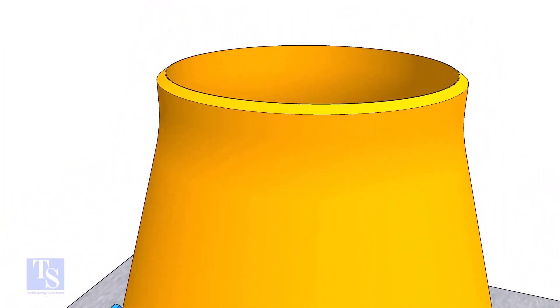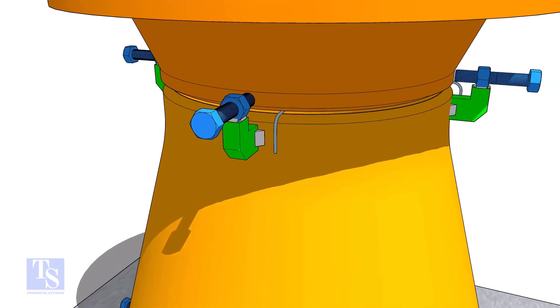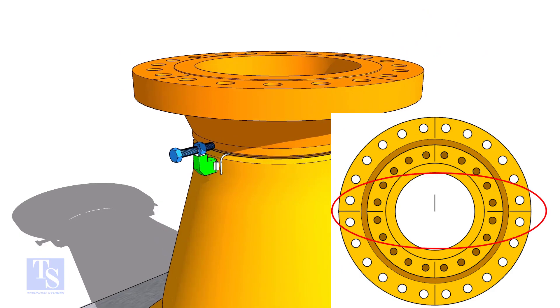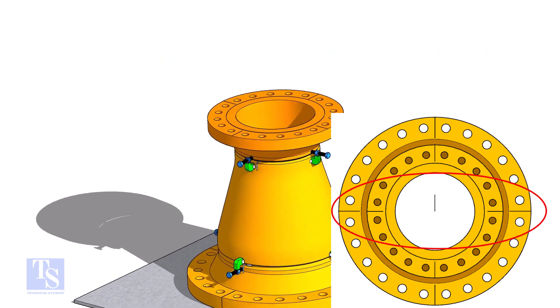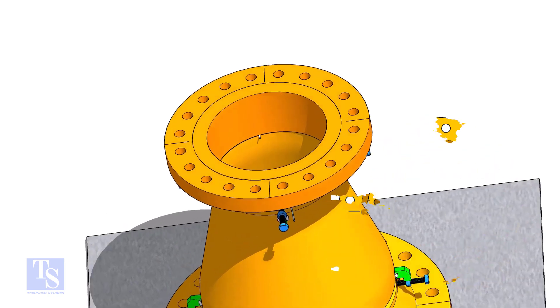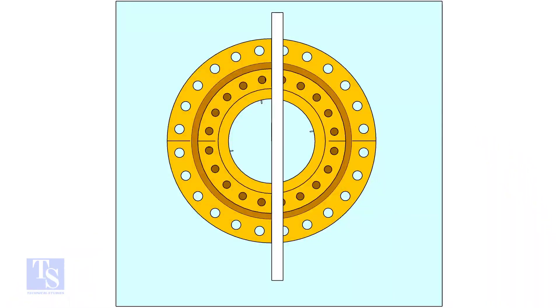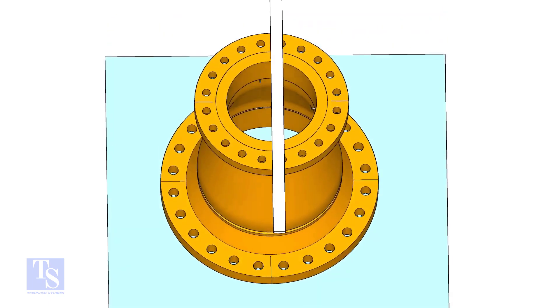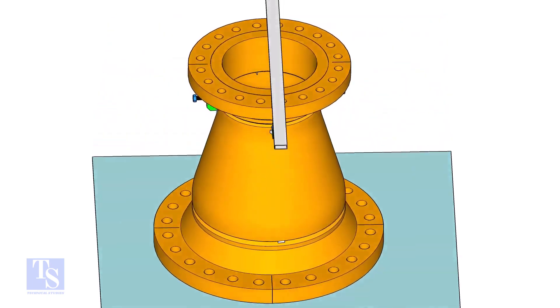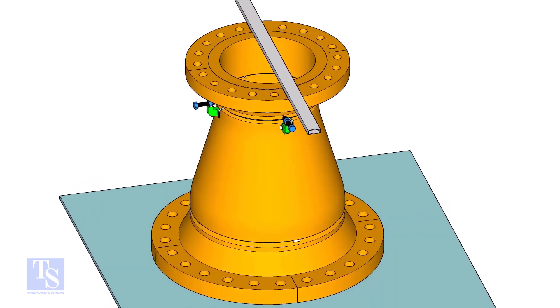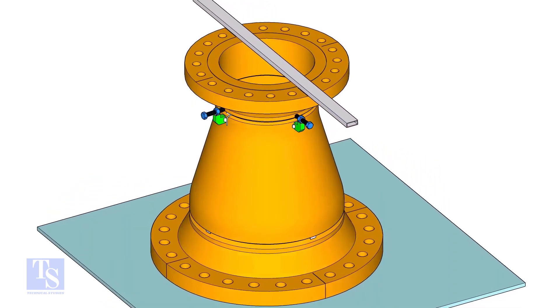Put the smaller flange on its position roughly matching the center lines of both flanges. Put a straight edge or a rectangular box on the top of the small flange with one edge exactly on the center line.